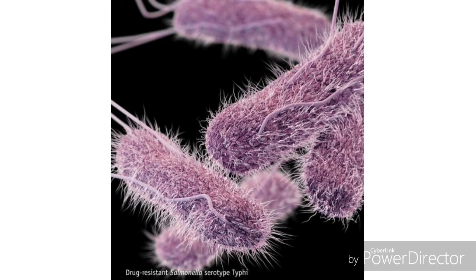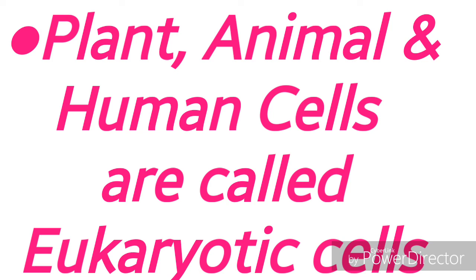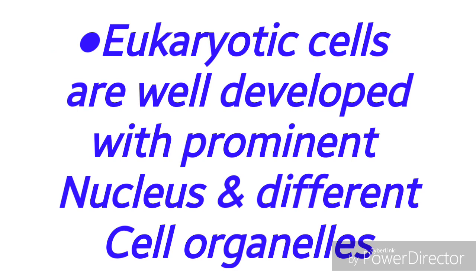Now let us see an example of harmful bacteria. Typhoid-causing bacteria — all of you know that typhoid causes very high fever. This typhoid is caused by a bacterium named Salmonella typhi. Plant, animal, and human cells are called eukaryotic cells. Eukaryotic cells are more developed; they contain a prominent nucleus, and surrounding the nucleus different cell organelles are present.